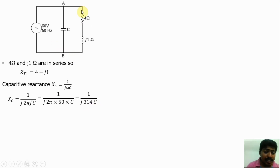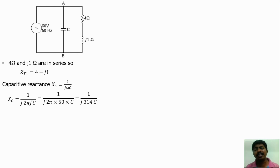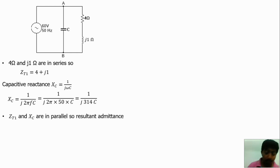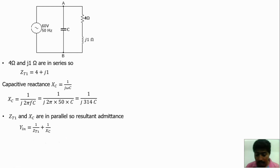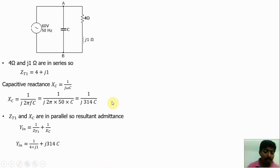Now Z_T1 is in parallel with X_c. Since they are in parallel, admittance calculation is easier. Y_in equals 1 divided by Z_T1 plus 1 divided by X_c, because for two parallel elements the admittance is the sum of individual admittances. Substituting, Y_in equals 1 divided by (4 plus j1) plus j·314C. Now simplify this equation.